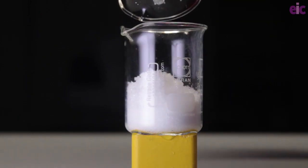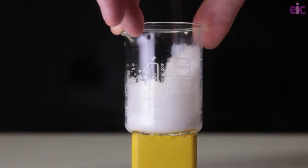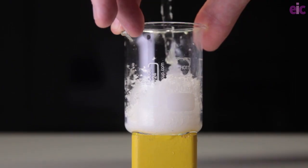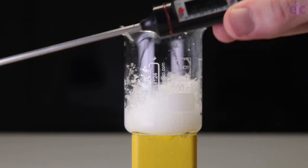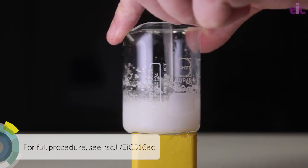This reaction is very simple. You just mix ammonium thiocyanate and barium hydroxide. Normally solids don't react very quickly, but after a bit of stirring the temperature starts to plummet, and strangely we see the solids turn to liquid.